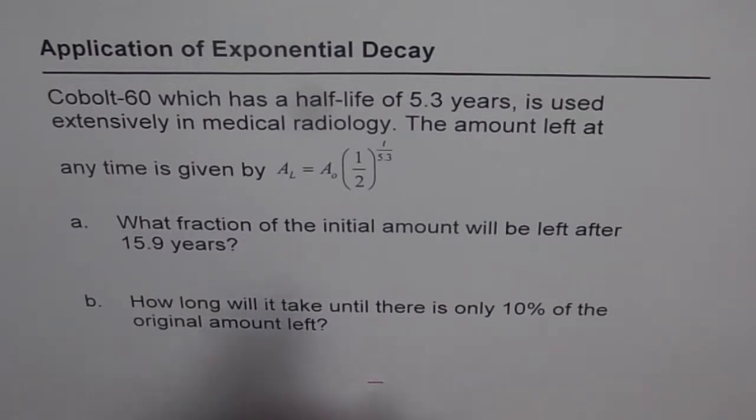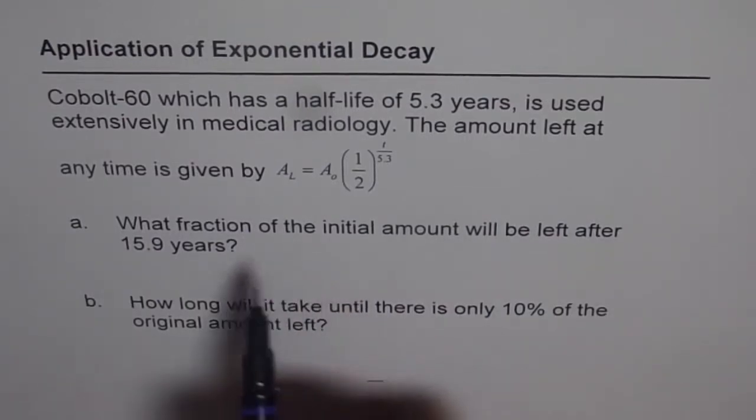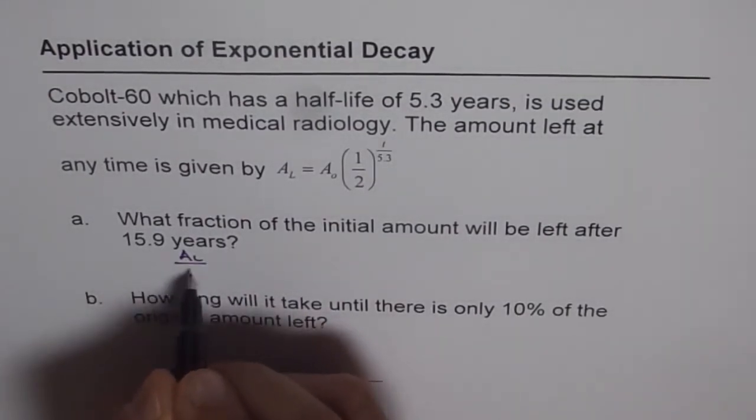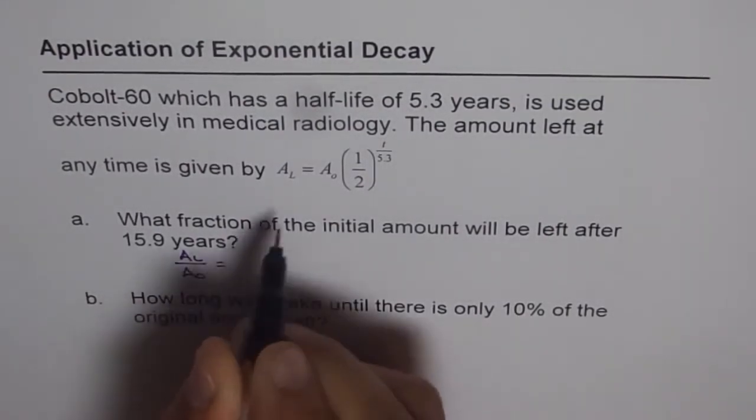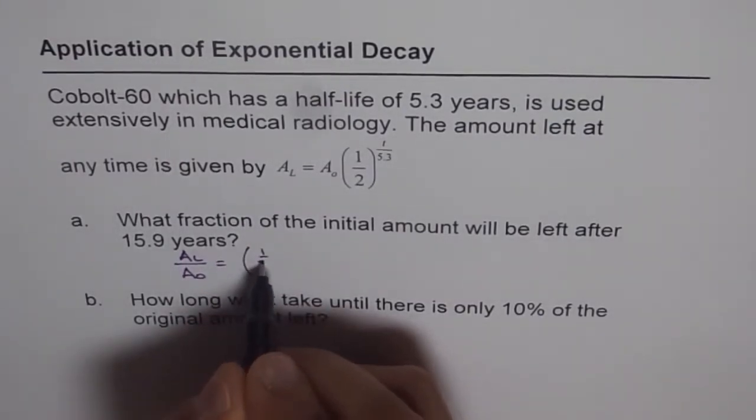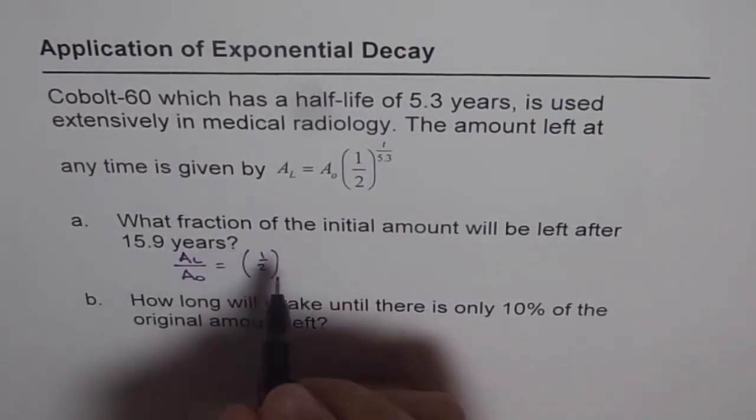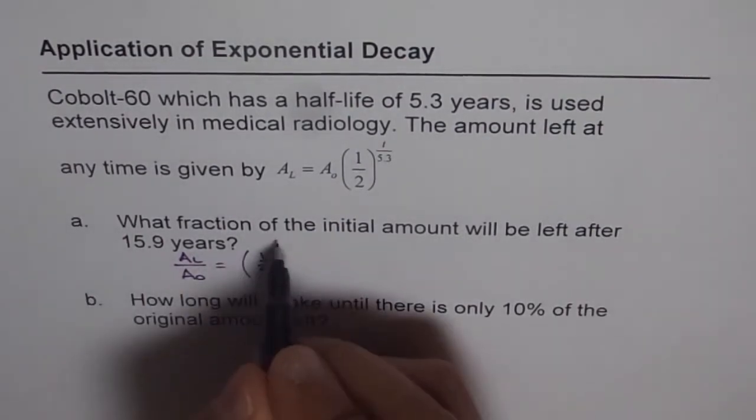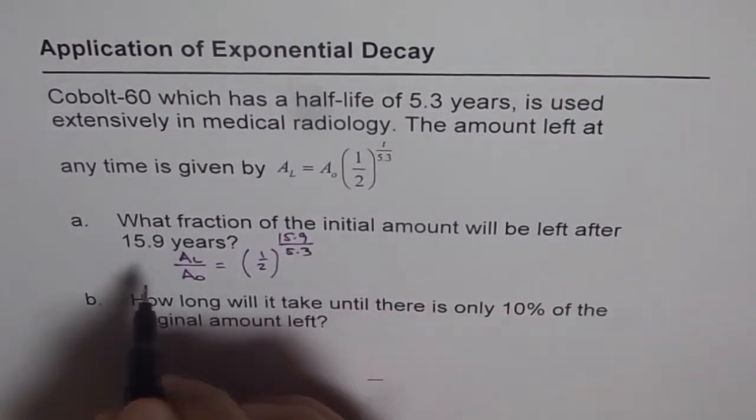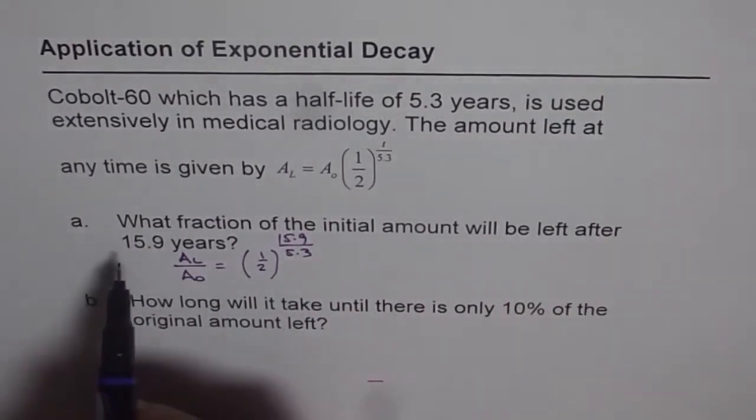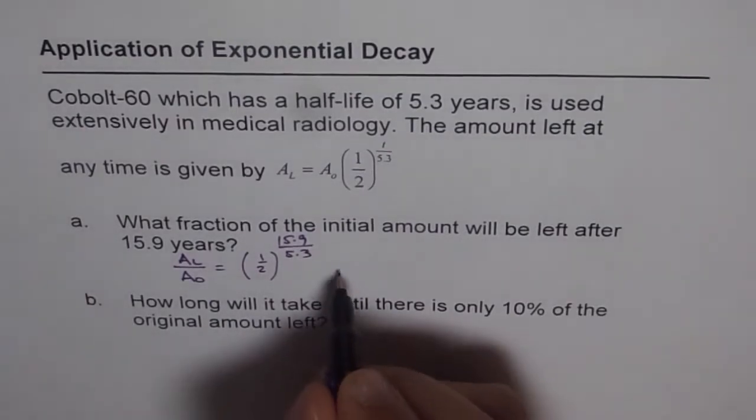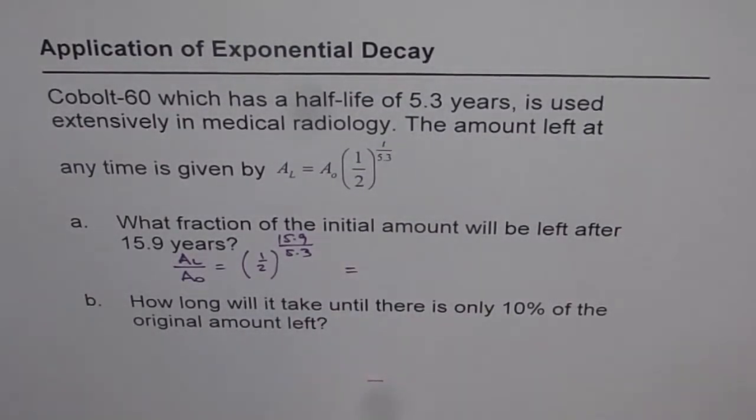Part A is direct application of the formula. The fraction of initial amount means A_L/A_0, which equals (1/2)^(T/5.3). Since T = 15.9 years, we have (1/2)^(15.9/5.3). We can use a calculator to calculate this answer.